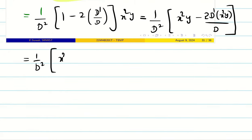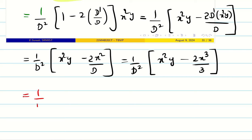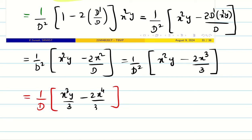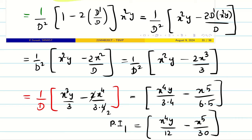Now I proceed: (1/d square) of x square y, and d dash of x square y is simply x square, so that term becomes x square by d. 1 by d means integrate with respect to x, giving 2x cubed by 3. Now integrating once more — 1 by d square of x square y gives x cubed y by 3, and 2 times d dash of x square y divided by d squared gives 2x cubed by 3 into 4. Integrating again: x power 4 by 3 into 4. This cancels, leaving minus x power 5 by 6 into 5. Simplifying: PI1 equals x power 4 times y by 12 minus x power 5 by 30.